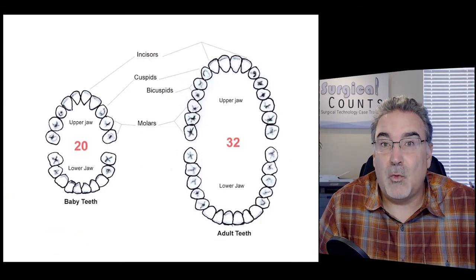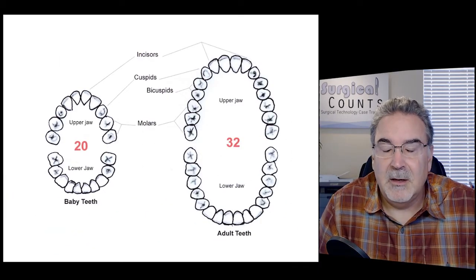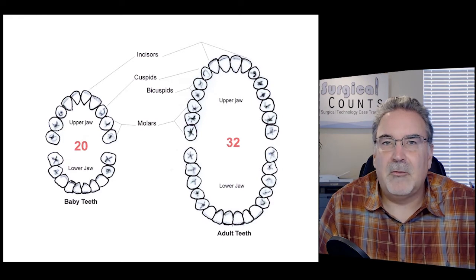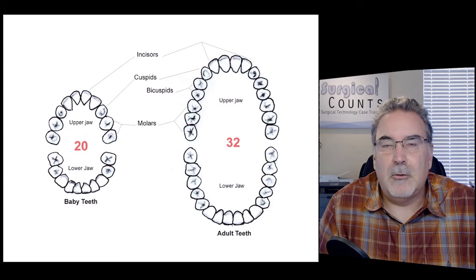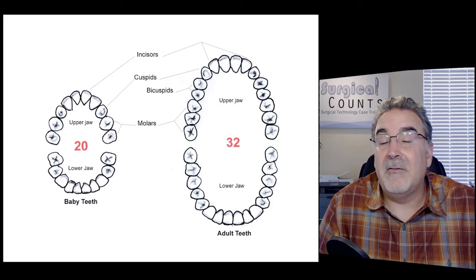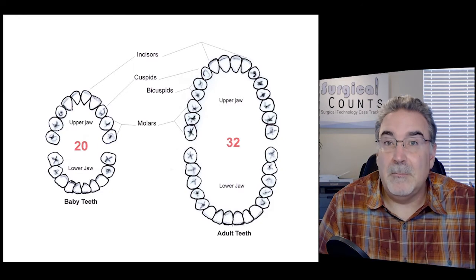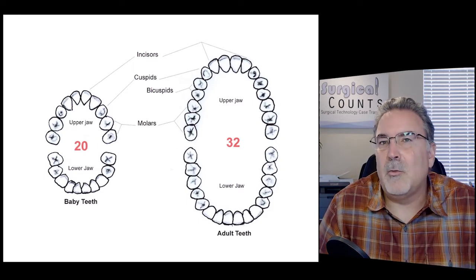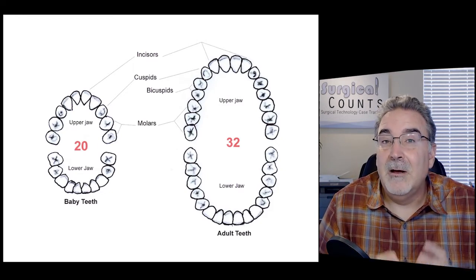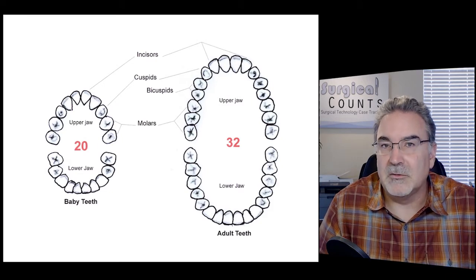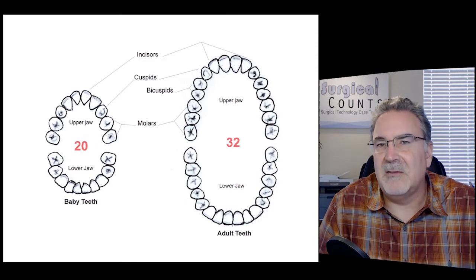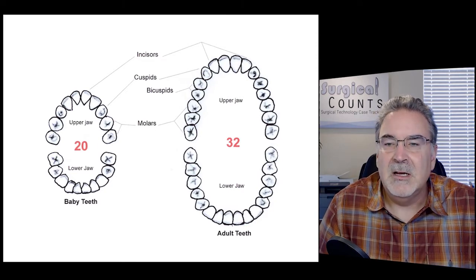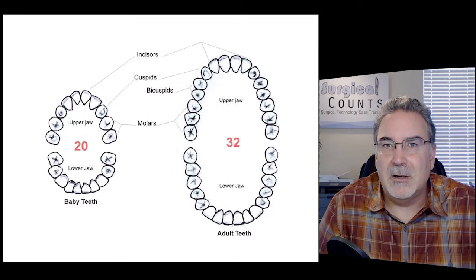As children, we have 20 teeth — these baby teeth. We lose them; they fall out to make room for the adult teeth that grow in later, and we have 32 of those normally. Many people, like me, only have 24 because I've had four bicuspids and four molars removed. So removing teeth to make room for other teeth is kind of a normal thing in Western societies. But naturally, we generally have 32 adult teeth.